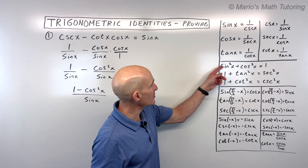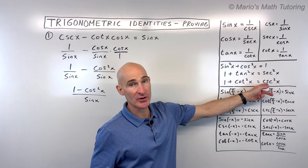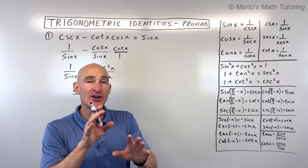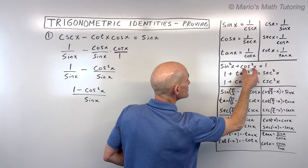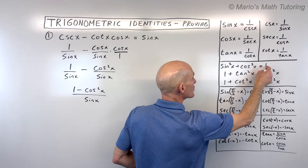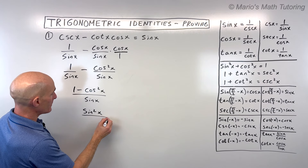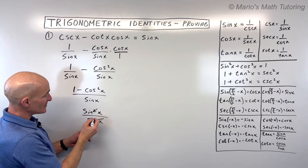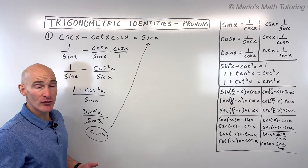At this point I notice 1 minus cosine squared x in the numerator. Whenever I see something to the second power, I think of the Pythagorean trig identities: sine squared plus cosine squared equals 1, 1 plus tangent squared equals secant squared, and 1 plus cotangent squared equals cosecant squared. These can be rearranged and still form an identity. Since sine squared equals 1 minus cosine squared, we replace the numerator with sine squared over sine x. One sine in the denominator cancels one in the numerator, leaving us with sine x — which is what we were trying to prove.